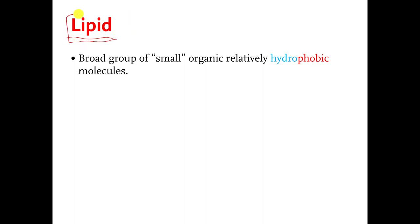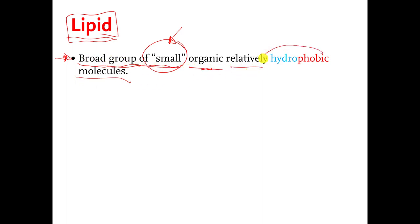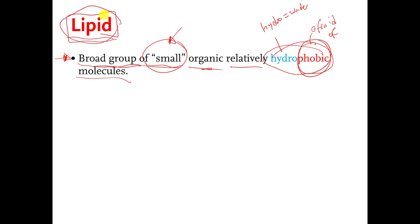What's a lipid? A lipid is a type of organic molecule. Lipids are a broad group of small organic, relatively hydrophobic molecules. Hydro means water, and phobic means afraid of. So lipids are molecules that have a tendency to not like water, or you can think of them as being afraid of water.